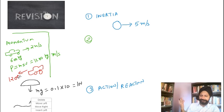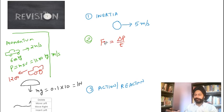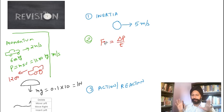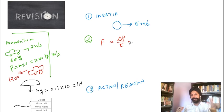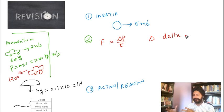Newton says the rate of change of momentum is equal to the net external force. The rate of change means change per unit time — so that's delta p divided by t equals the net external force. Delta is a Greek alphabet meaning 'change' — delta t is change in temperature, delta p is change in momentum. Change in momentum divided by time equals force. That is the core of the second law.